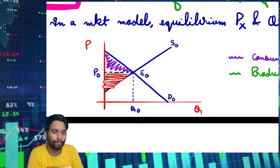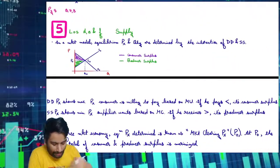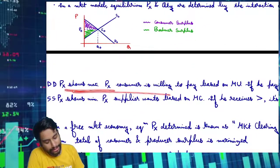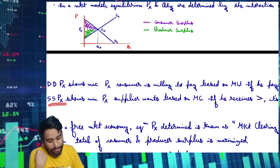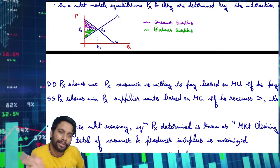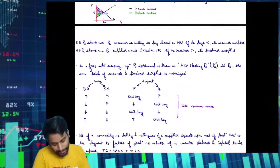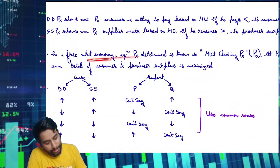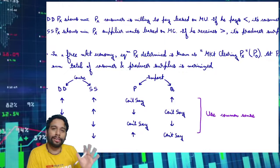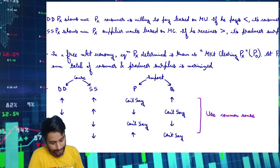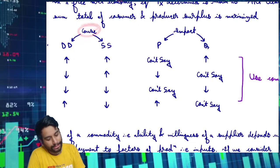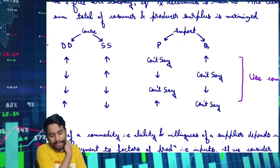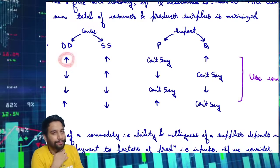Producer surplus or supplier surplus, same concept. Demand is how much consumer maximum pays and how much supplier supplies at a particular price. Free economy, equilibrium, market clearing price - demand and supply intersection - cause and impact.